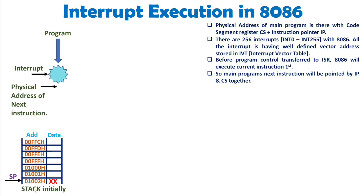We need to store the flag and physical address on the stack because once the interrupt service is complete, 8086 must return to that exact physical address in the main program with the same flag status. We don't want to erase the main program — we just service the interrupt and then resume. So we push the flag and the physical address onto the stack.